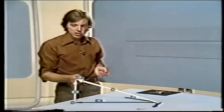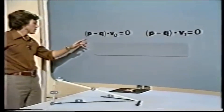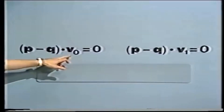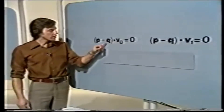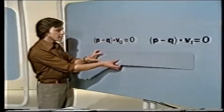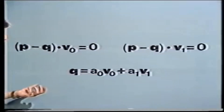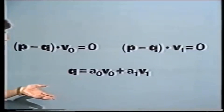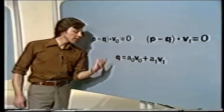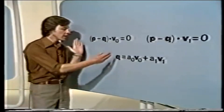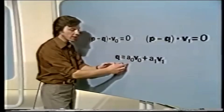These two equations simply tell us that P minus Q is orthogonal to V0 and orthogonal to V1. We can go one step further: we can express Q as a linear combination of the two vectors V0 and V1. In other words, we're using V0 and V1 as a basis for our subspace. Then what we've got to do is to calculate the coefficients A0 and A1. As soon as we know those, we'll know the vector Q. And all we have to work with are these orthogonality relations. So just how do we use those orthogonality relations to calculate A0 and A1?